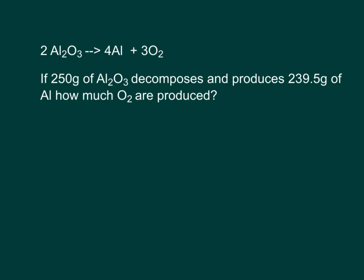On this problem, again, I start by just looking at the words that I've got. So it's telling me that I've got 250 grams of this, and it decomposes and produces 239.5 grams of Al, or aluminum. When something decomposes, that means I'm starting with something big, and it's breaking down. So here I know that I've got 250 grams as my reactants, and I can also look right up here and see that as well. So I can just kind of substitute.